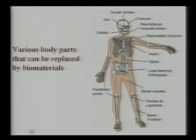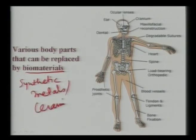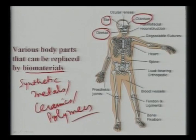This viewgraph shows different body parts of a human being which can potentially be replaced by synthetic materials or biomaterials — either metals, ceramics, polymers, or their composites. These can replace dental restorative materials such as glass ceramics, ear implants where hydroxyapatite-based materials are used, and cranial applications where radiotransparent polymeric materials are used.